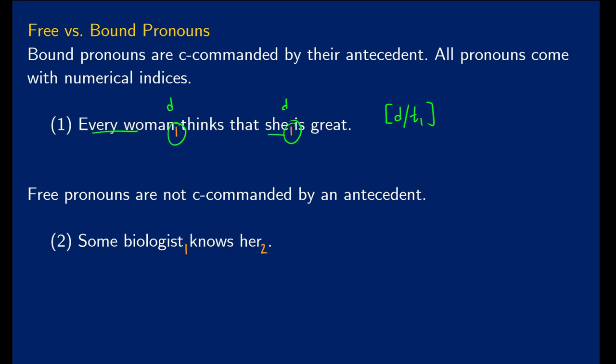In the case of free pronouns, these are just not C-commanded. So some biologist knows her. Her is someone else in the discourse who is not the biologist. So what will happen with these ones is these will just get a number. So then in our assignment function, we would have to see who this is. So maybe two is Mary. So then once we say some biologist knows her, we're really saying some biologist knows Mary.